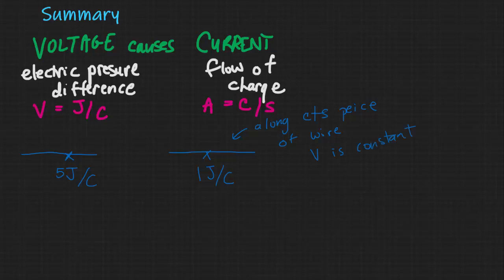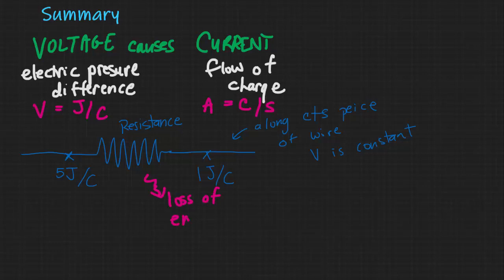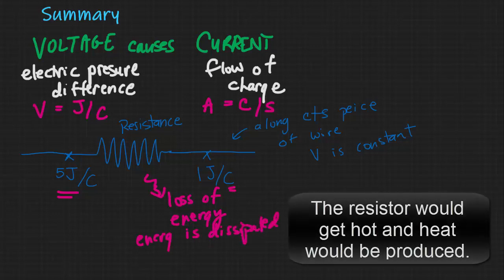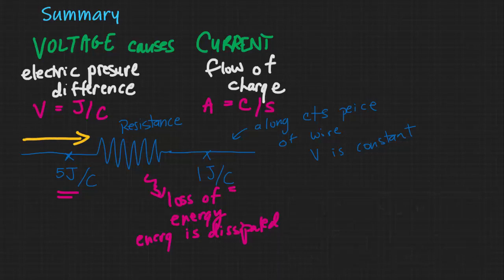So we have to ask: how did the electric pressure change — how did the voltage change? There must have been some sort of resistance, some blockage to the flow. What that means is there's a loss of energy — energy is dissipated. The charges had more energy on one side than the other, so energy gets used up and dissipated. But notice the current doesn't — if it's two amps on one side, it'll be two amps on the other. The current doesn't get used up; it's the energy that gets used up.